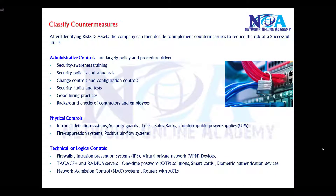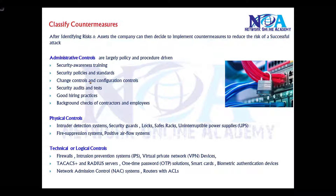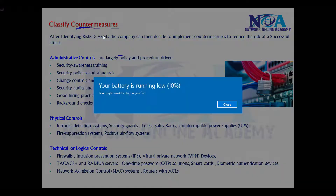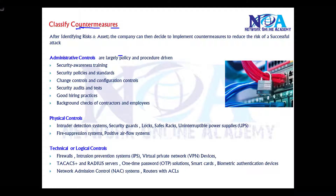The next thing is classifying the countermeasures. Once we identify the risks and the assets of the company, which we did in the previous videos, we need to decide what are the different countermeasures — the security steps we're going to apply in our company to reduce the risk of a successful attack. Countermeasure means protecting from potential risks, threats, or attacks by applying some security policies. Once we apply these countermeasures, we can either eliminate the attack or at least minimize the impact of that particular attack.